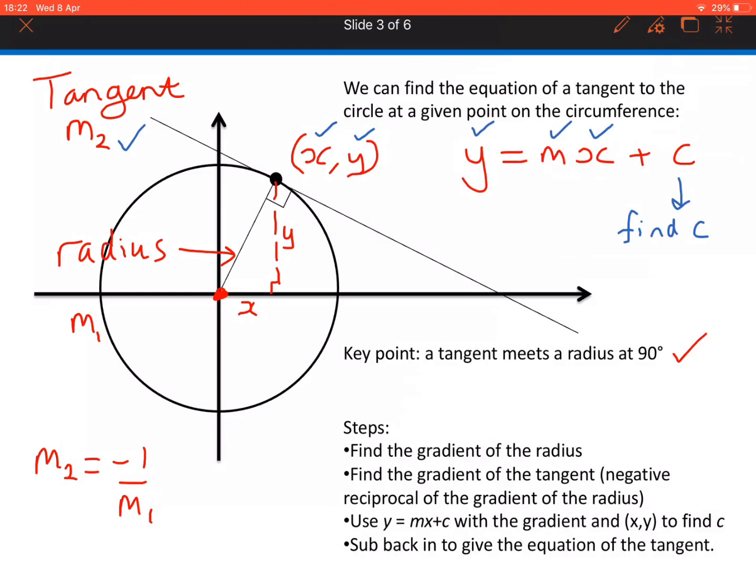Then we use the y value at the point we're finding the equation of the tangent at, the x value at that point, and the gradient of the tangent. Sub those into y = mx + c to find c. And then finally, we write the equation of the tangent using c and m.